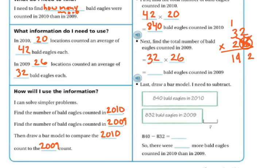Now this is really two tens, so I put my zero there because it's 20, not two. Two times two is four. Two times three is six. So I get 640, and then I add the partial products together: that's 832 bald eagles counted in 2009.